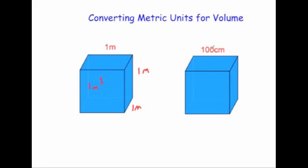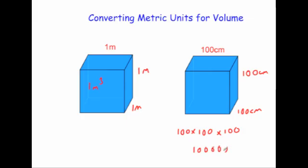This second cube's volume is going to be 100 centimeters by 100 centimeters by 100 centimeters. When we multiply those together — 100 times 100 times 100 — we get one followed by six zeros: one, two, three, four, five, six. So the volume is one million centimeters cubed. That means one meter cubed is the same as one million centimeters cubed.